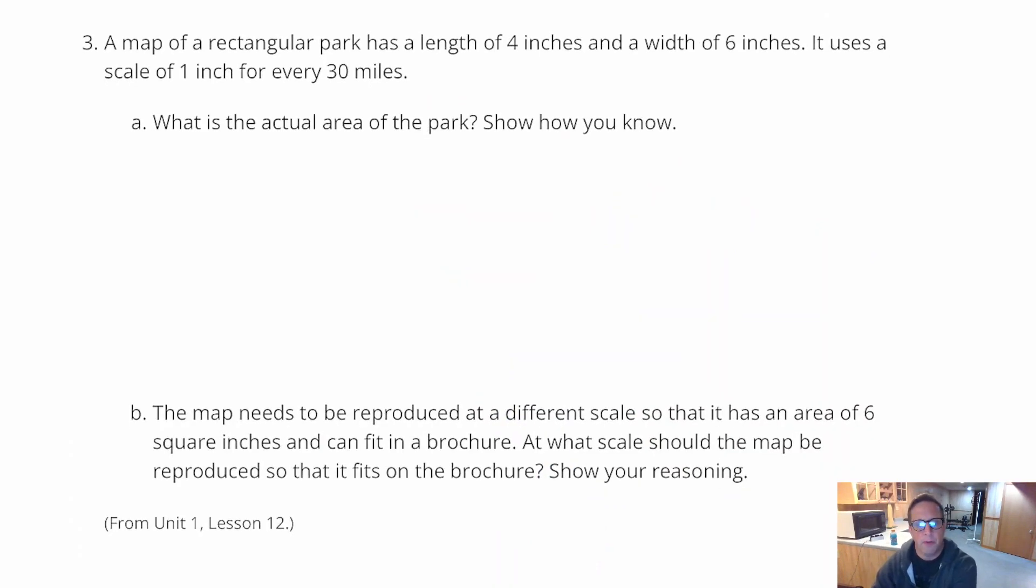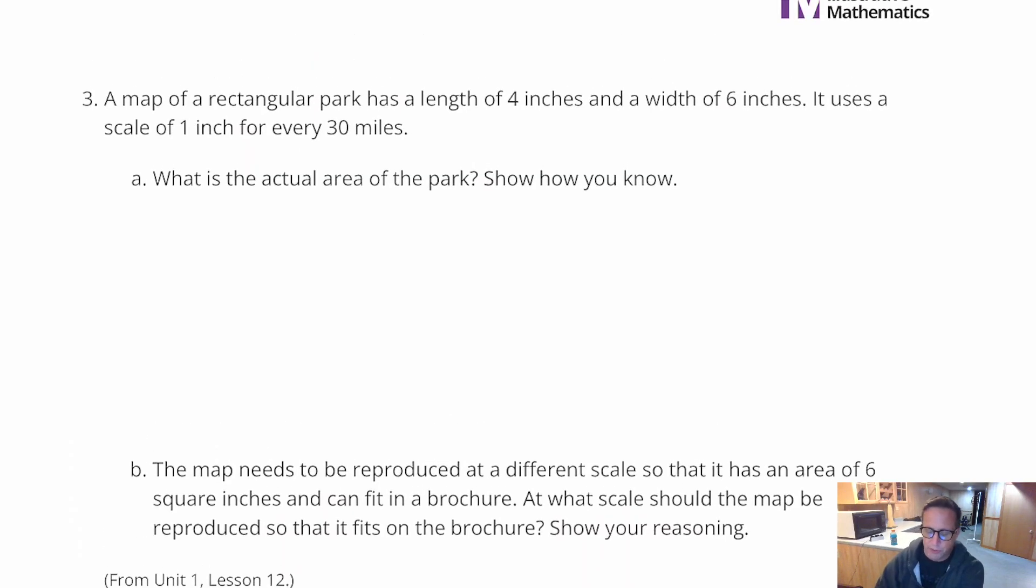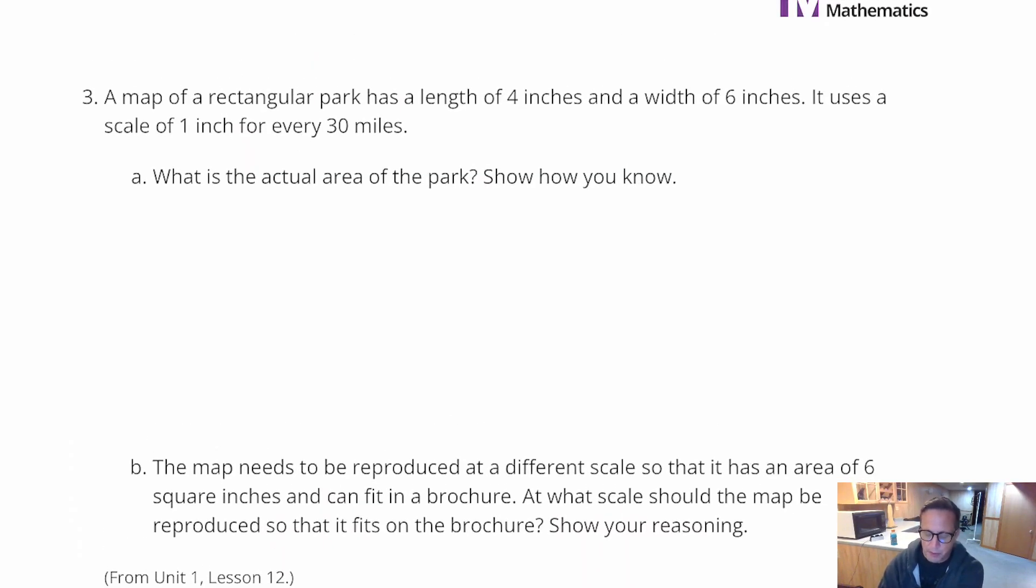Question number 3 has a map of a rectangular park has a length of 4 inches and a width of 6 inches. It uses a scale of 1 inch for every 30 miles. For question A, what is the actual area of the park? Now just to recap, area when it comes to rectangles, parallelograms in general, is going to be length times width. Or sometimes it's referred to as base times height.